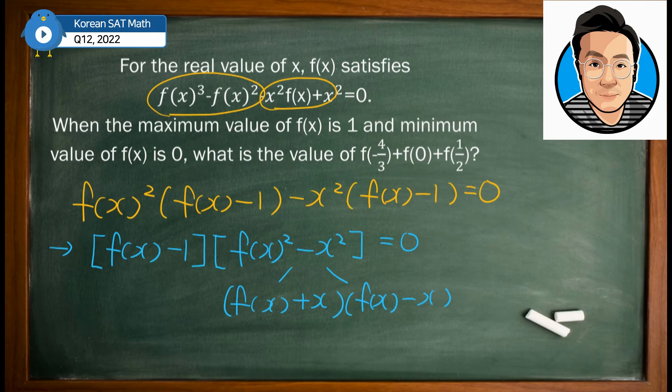So we have three values for f(x). One of them is 1, the other is negative x and positive x. That's why your f(x) is equal to 1 or x or negative x.